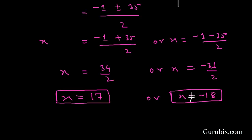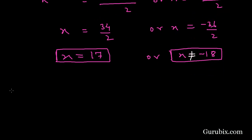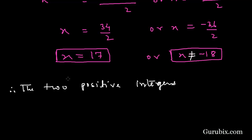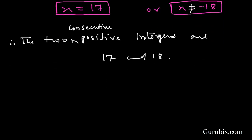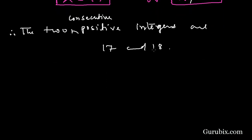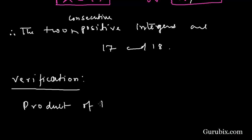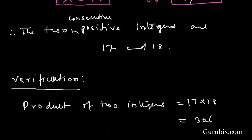Since the two integers must be positive, x equals minus 18 is not applicable. Therefore the two consecutive positive integers are 17 and 18. Verification: 17 times 18 equals 306, which confirms our solution is correct. Thank you.